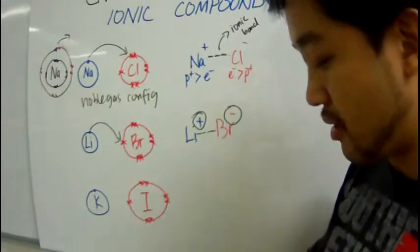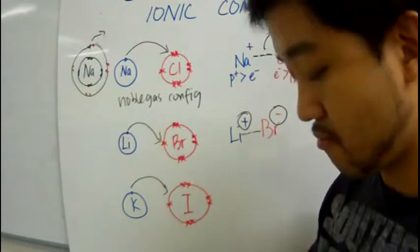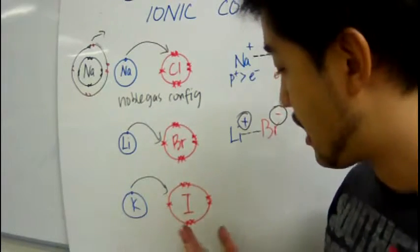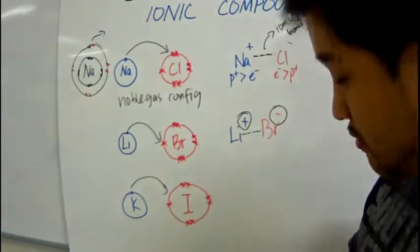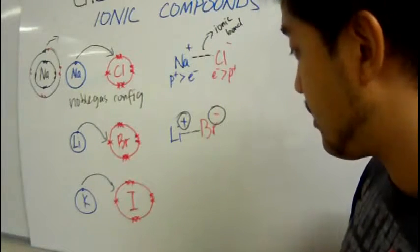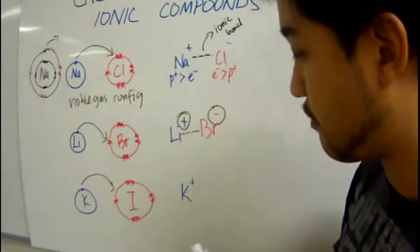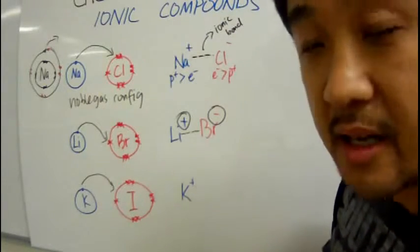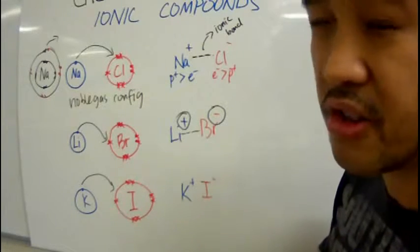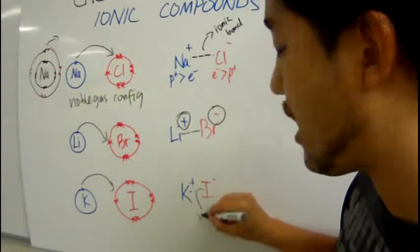Let's look at another one: potassium and iodine. It's going to do the same thing — electrons are donated from the metal and attracted to the non-metal. It forms a potassium cation and an iodide ion, and these two are also attracted to each other, forming an ionic bond.